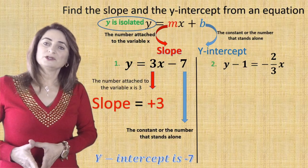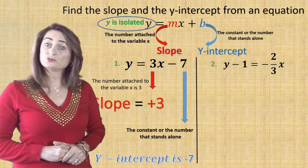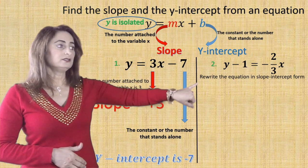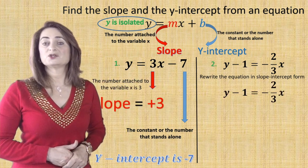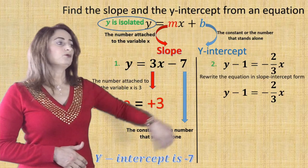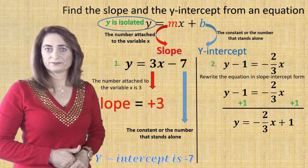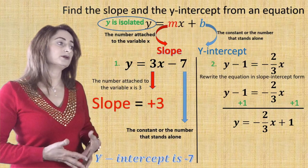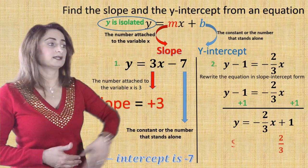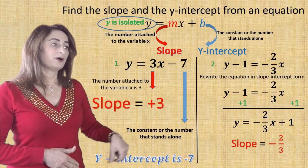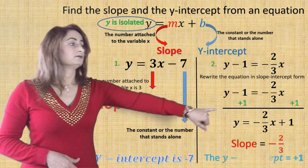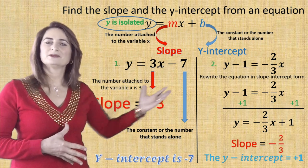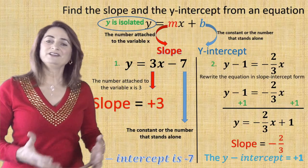For the second problem, is y isolated? No, it has minus one on the same side. Rewrite in slope-intercept form by adding one to both sides, giving y equals negative two-thirds x plus one. Now the slope is negative two-thirds — the number attached to x — and the y-intercept is positive one — the number that stands alone.